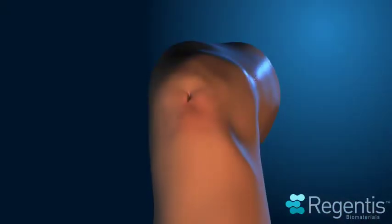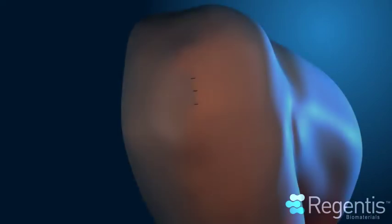To complete the procedure, the joint is cycled several times. The Gelrin-C implant is visually inspected to verify that it remains in place.